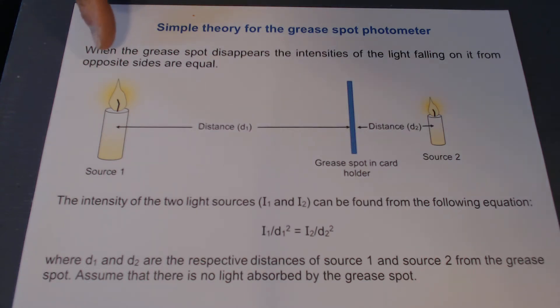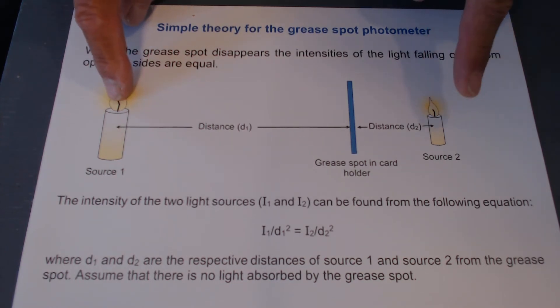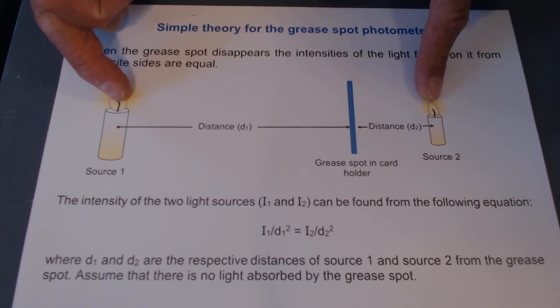Now you have two sources, source 1 and source 2. These might be a candle and another smaller candle, or they might be a candle and a bulb in a holder, or they might be two bulbs.